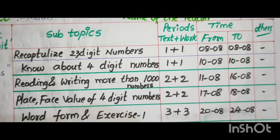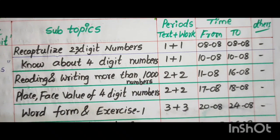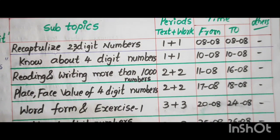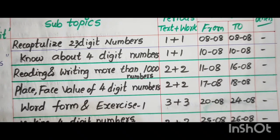Recapitalize 2, 3 digit numbers, 1 plus 1, August 8 to August 8. Know about 4 digit numbers, 1 plus 1, August 10 to August 10.